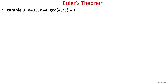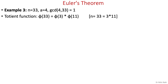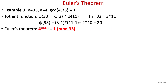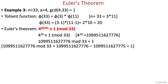Let's look at another example where n is a slightly larger composite number, n equals 33. We obtain its prime factors — 3 and 11 — and calculate their Totient functions individually, giving phi(33) equals 20. Applying Euler's theorem: 4 to the power 20 is congruent to 1 mod 33. Computing that large number mod 33 returns 1, which is correct.